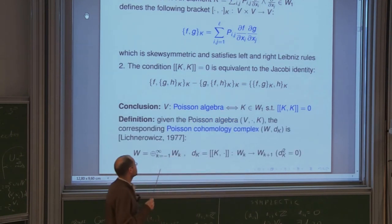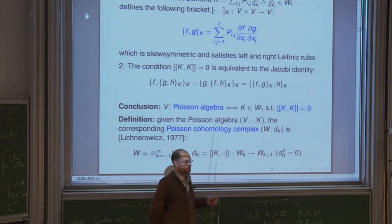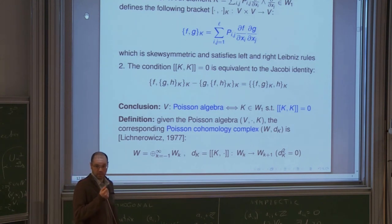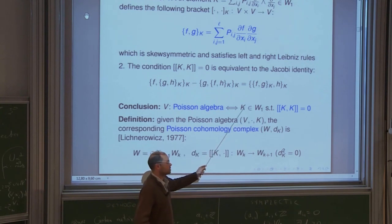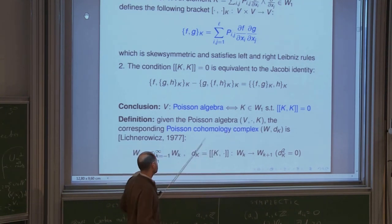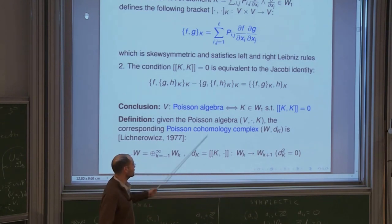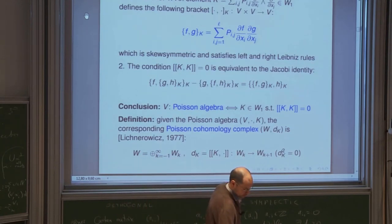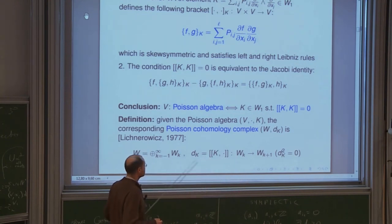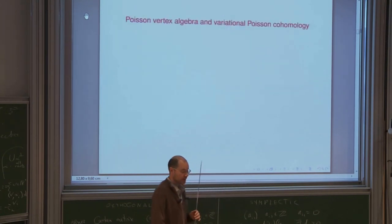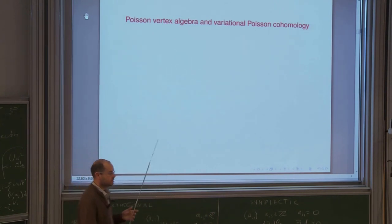This gives the definition of a Poisson algebra structure: just an element K from W^1 such that the Schouten bracket of K with itself is zero. This definition has the advantage that it comes together with a cohomology complex: given such a K, the adjoint action of K on the space of polyvector fields is a differential, yielding a cohomology complex called the Poisson cohomology complex. This was first introduced, as far as I know, by Lichnerowicz.